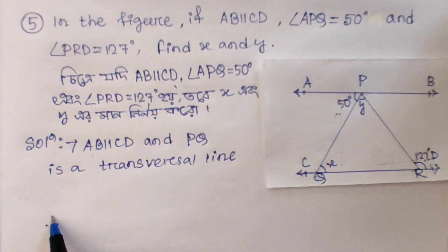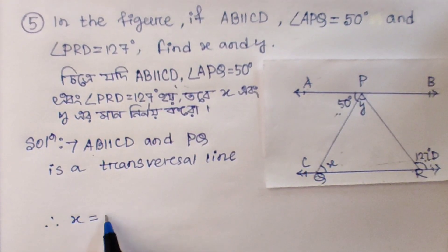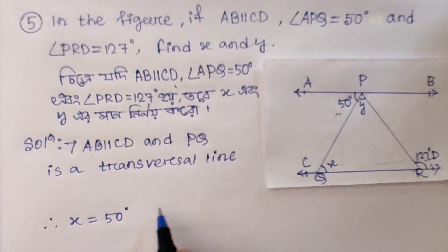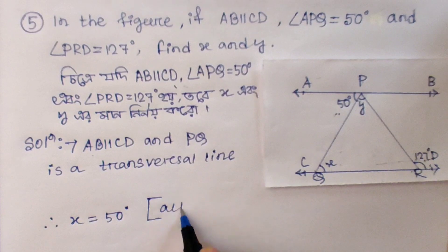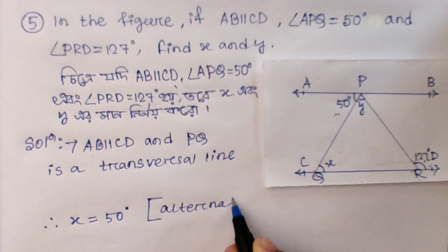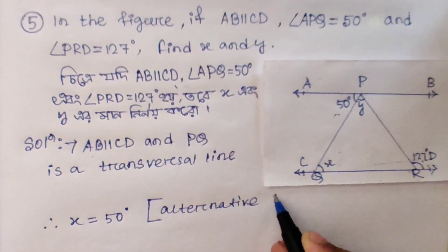Therefore x equals 50 degrees by alternative interior angle.